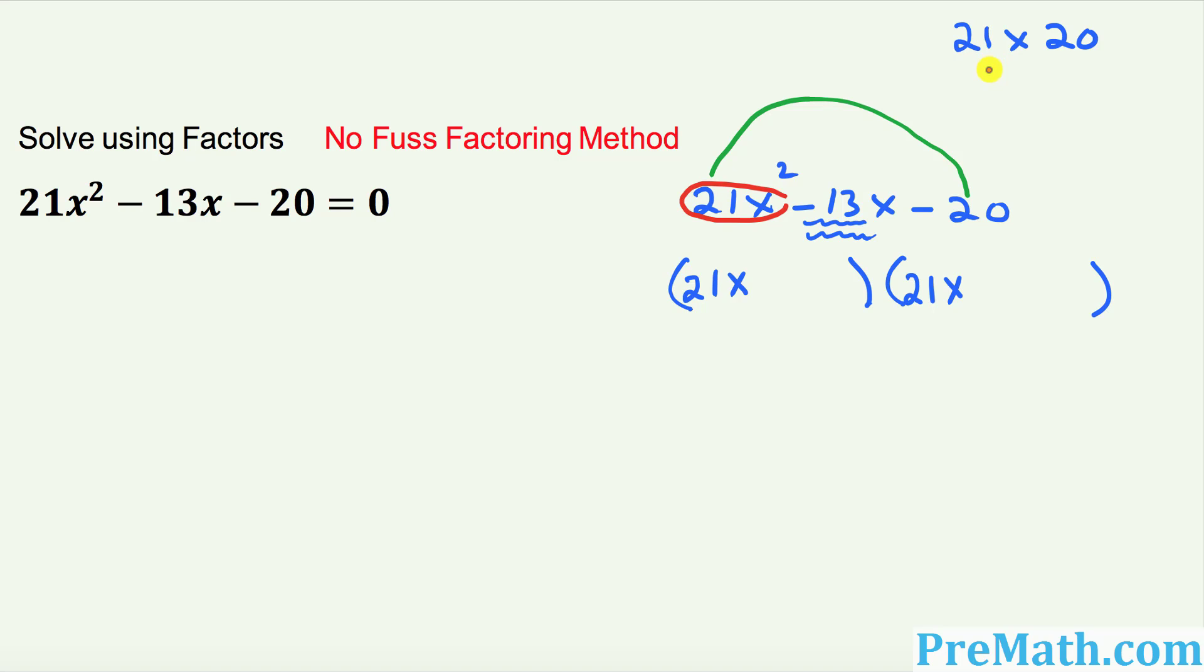So the simple way I want you to do like this one. Let's go ahead and manipulate this factoring thing. So I want you to write down 21 as 3 times 7. And 20 could be written as 5 times 4.